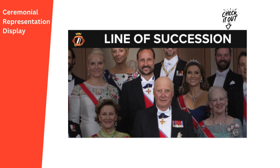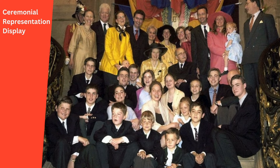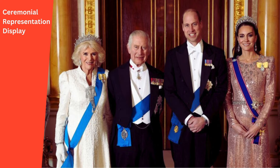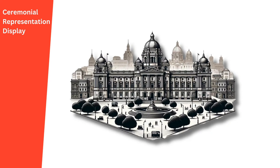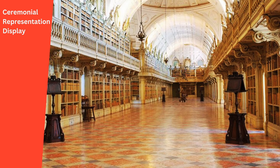Yet beyond bloodlines, some monarchies opt for election, choosing a ruler from outside the dynastic circle. Despite the potential for division, dynasties can also embody cooperation. The concept of corporate monarchy suggests a collaborative effort among family members — including mothers, wives, and siblings — all working together for the dynasty's continuity and their realm's stability. Transitioning from the intricacies of dynasty to the grandeur of the court, we find the monarch's stage. Palaces, beyond their architectural magnificence, serve as key ceremonial venues and symbols of monarchical image.